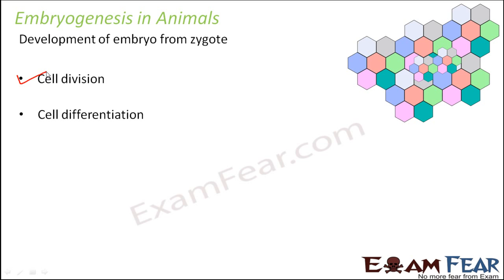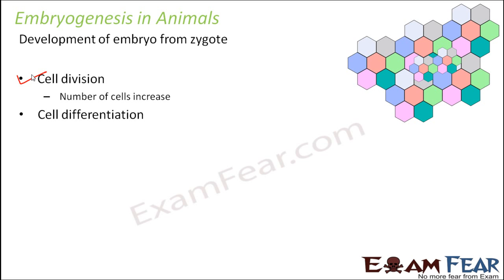When I say cell division, that means one cell divides to form two cells, the two cells form four cells, four cells form eight cells. That is how the number of cells increases by cell division.